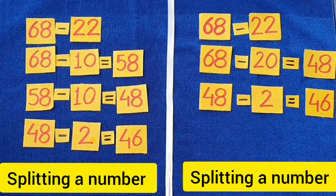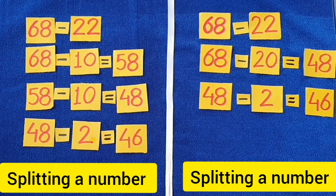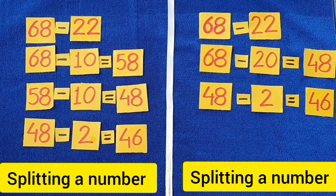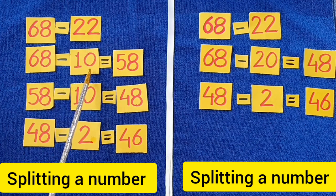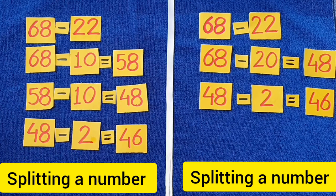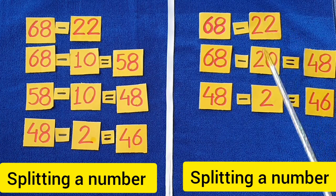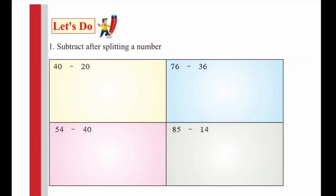Today, you have learned to subtract 2 digit number from a 2 digit number by splitting numbers. In first method, we have split 22 as 10, 10 and 2. In another method, we have split the same number 22 as 20 and 2.